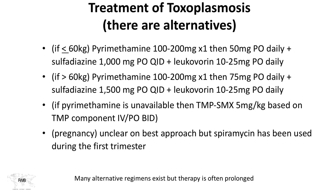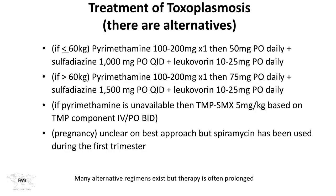Treatment is combination therapy. The primary drugs are pyrimethamine and sulfadiazine with leucovorin rescue. If pyrimethamine is unavailable, we'll often use Bactrim (TMP-sulfa). Pregnancy is a challenge — it's unclear what the best approach is during pregnancy. Spiramycin has been used during the first trimester, but the best approach is actively being studied.